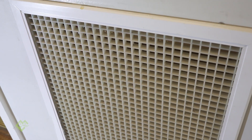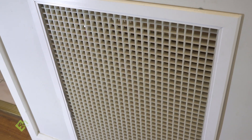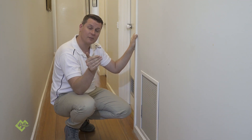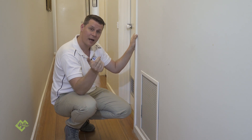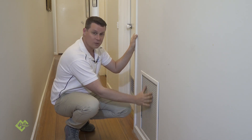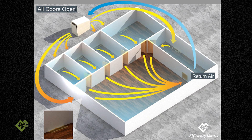The ducted heating return is where the air comes from all of the outlets throughout the building envelope. They get filtered and then the air gets reheated again and introduced back into the building envelope via the actual supply outlets.